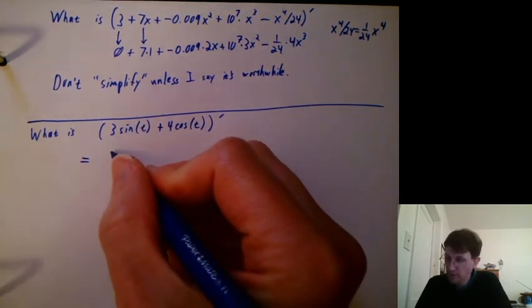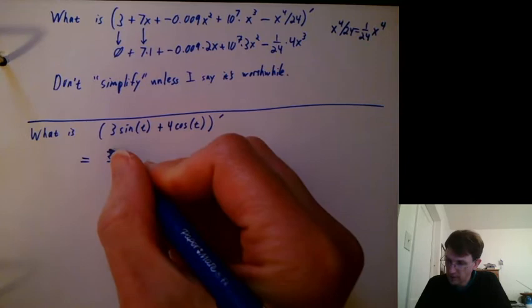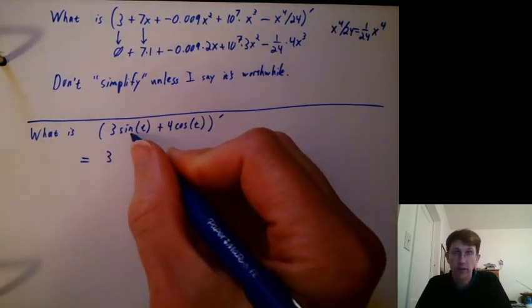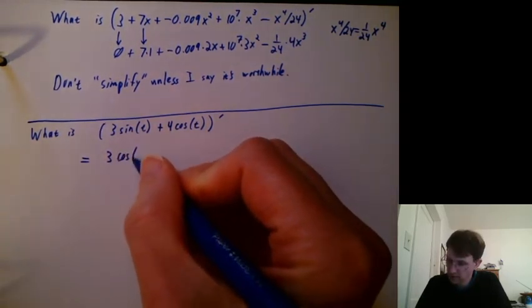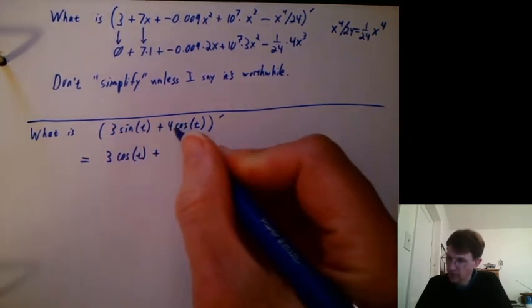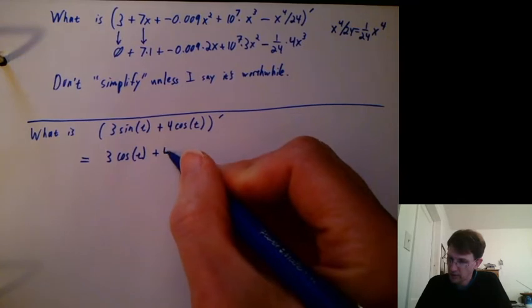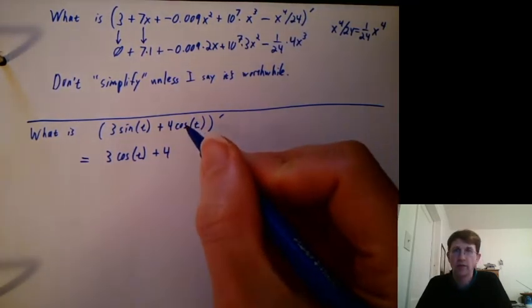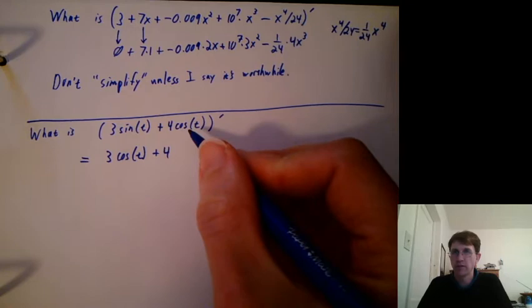Let's see if it matches this one. So the 3 I just copied. It's a constant multiplier. Derivative of sine is cosine. And then derivative of 4 cosine t. Well, 4 is a constant multiplier. And what's the derivative of cosine? This one might take a little remembering.